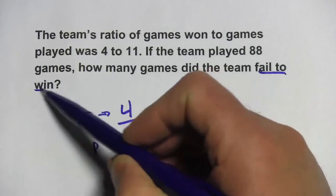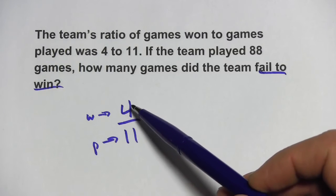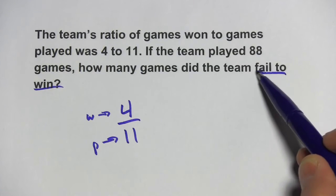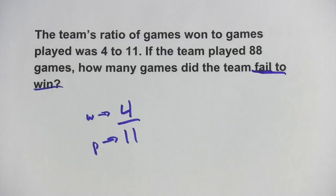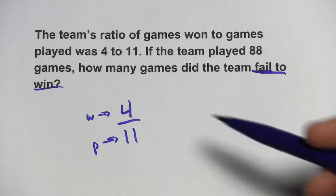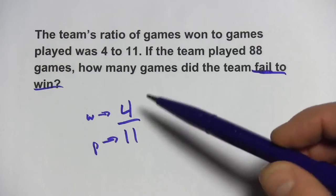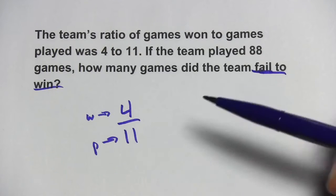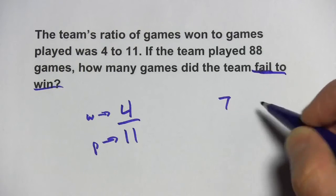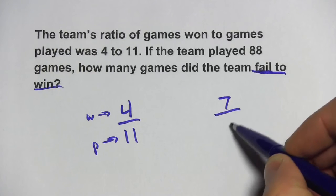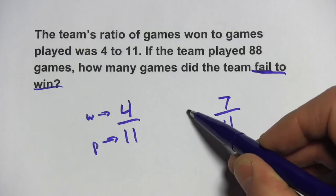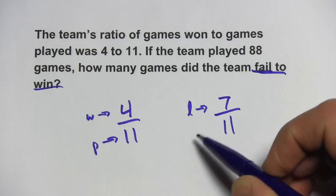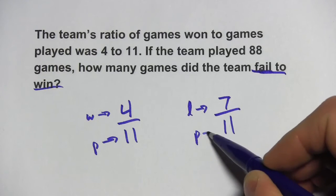So that's a little bit tricky. We know the ratio of how many games they won to how many they played. But we want to find how many they failed to win, which means how many they lost. So what I'm going to do is think to myself, well, if they won 4 out of 11 games, that means they lost 7 of those. So 7 of 11 is the games lost, that ratio of games lost to games played.